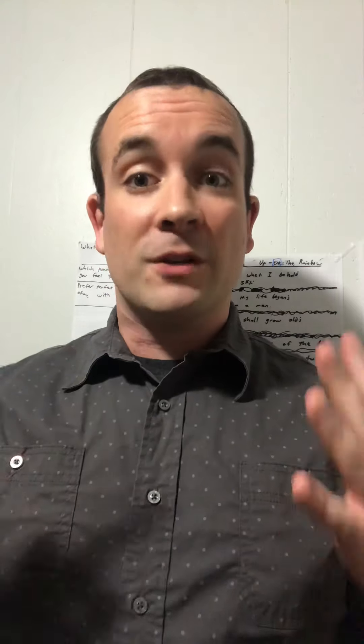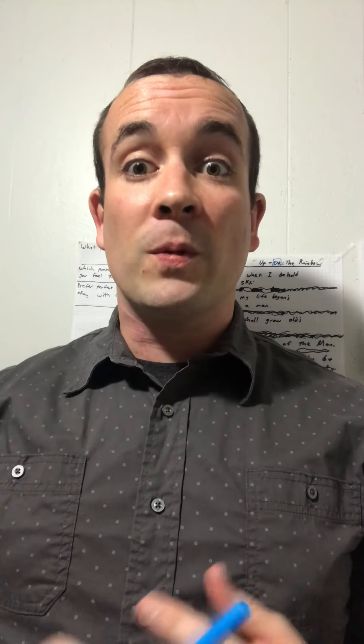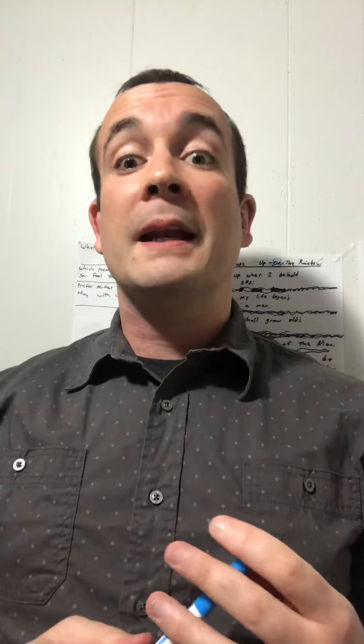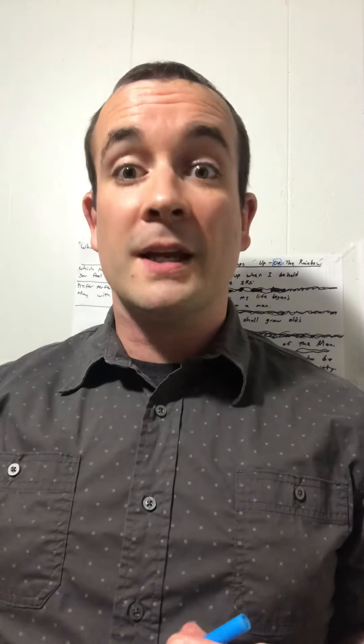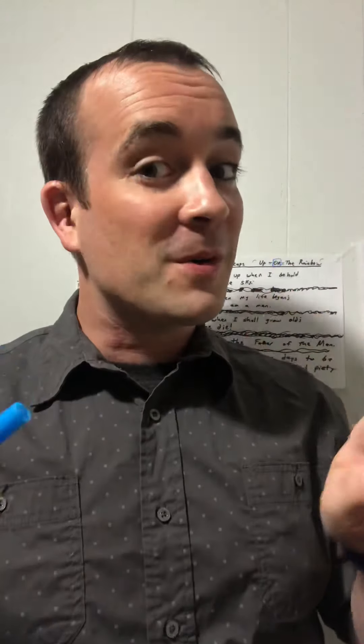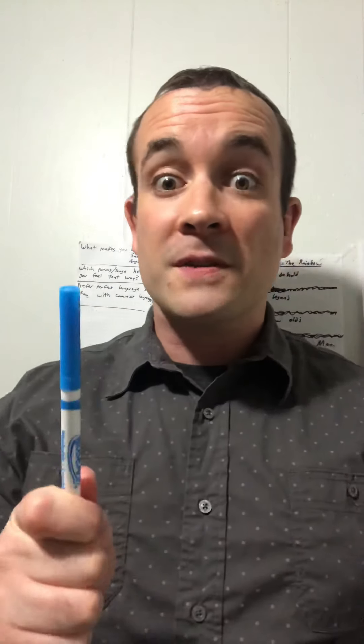Hey, what's up, this is Casey, your English 101 teacher. We've got a great class today — we're going to talk about a very famous poet named William Wordsworth and a poem he wrote about a rainbow.